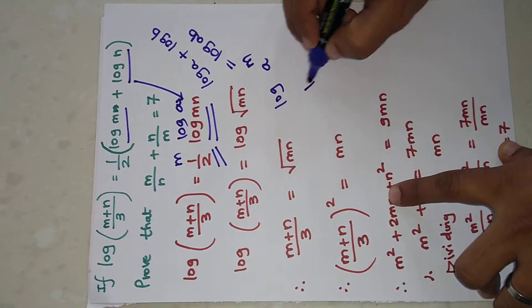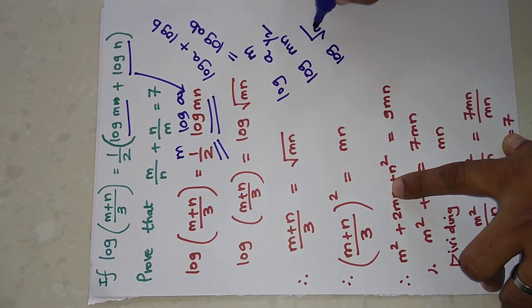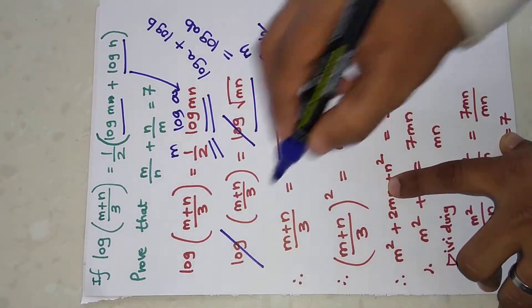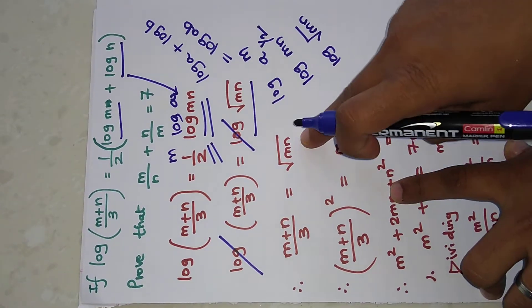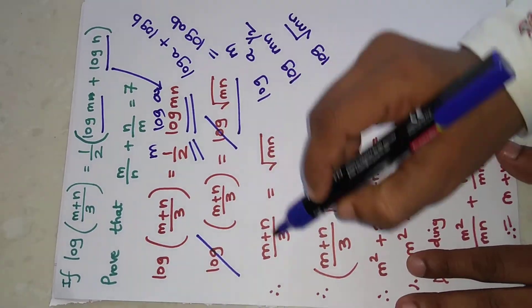So in that case, log(mn) raised to 1/2 we can write as log(√mn). So now log and log will get cancelled: (m+n)/3 equals √(mn). Now in this case, we're squaring on both sides.